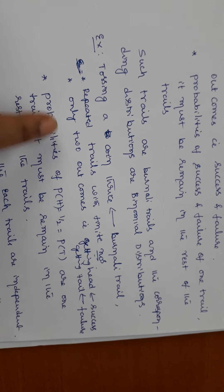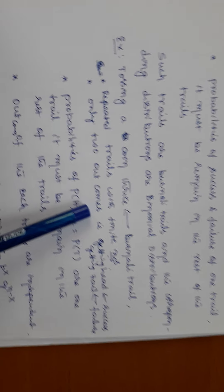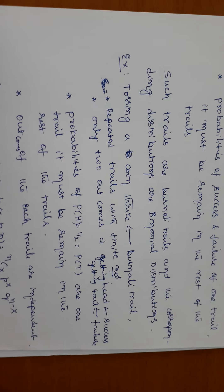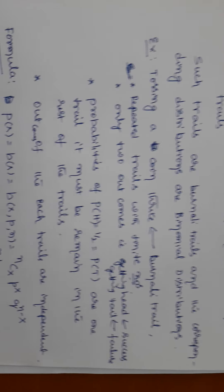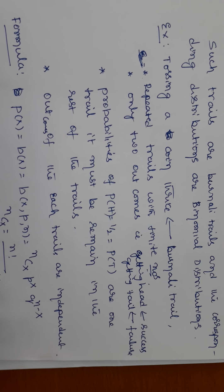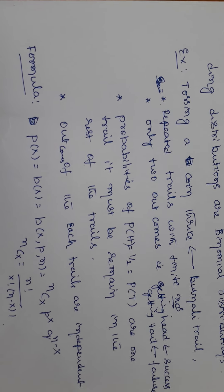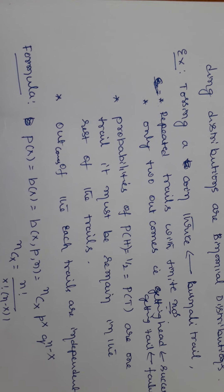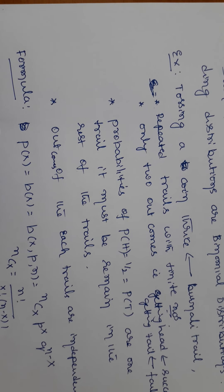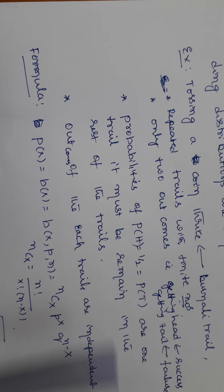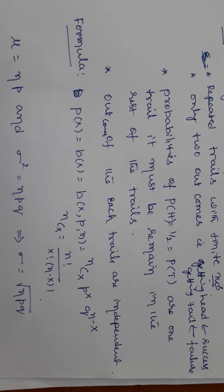Observe carefully: tossing a coin three times satisfies the repeated and finite condition. Also, when tossing a coin we expect only two outcomes — getting a head is a success and getting a tail is a failure — so that condition is satisfied. Now, the probability of getting a head is 1/2 and a tail is 1/2 for the first toss. For the second and third tosses, the probabilities remain 1/2 and 1/2. Therefore, the probabilities remain constant across all trials.